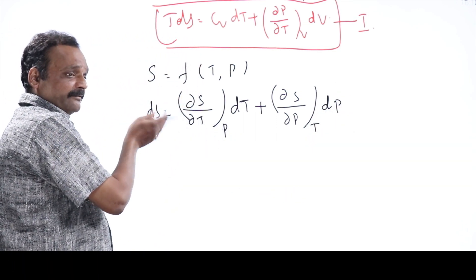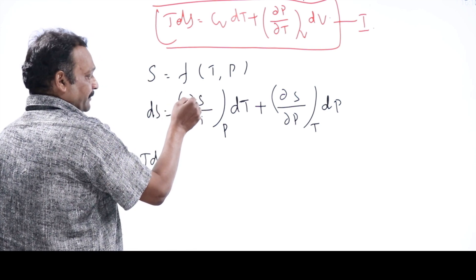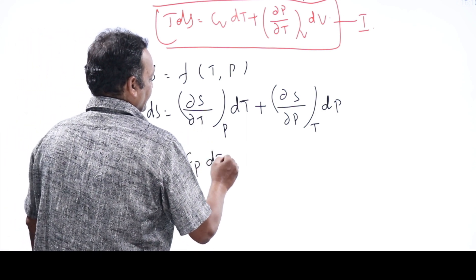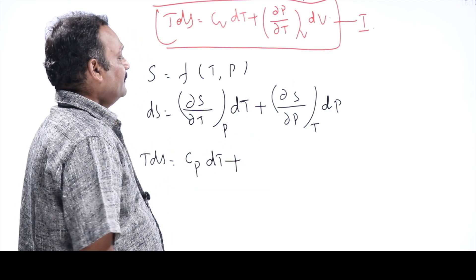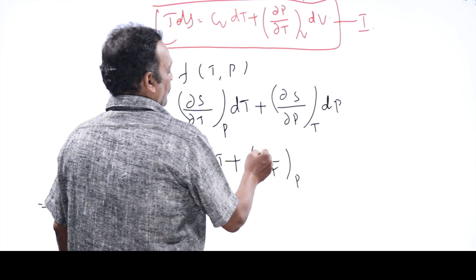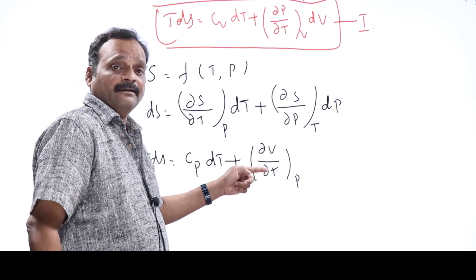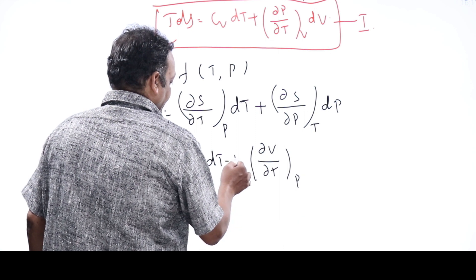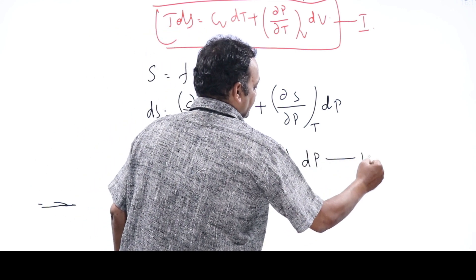Modify (∂S/∂P)ₜ using Maxwell's equations. Here dou T comes in the denominator with constant pressure, giving (∂V/∂T)ₚ. Since there is no P/T term, we must put a minus sign. This gives: TdS = Cp·dT − (∂V/∂T)ₚ dP. This is known as the second TDS equation — if you know the variation of volume with temperature at constant pressure and know Cp, you can calculate the heat transfer.